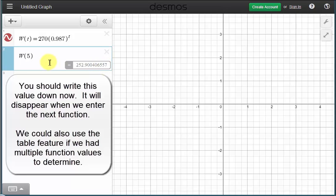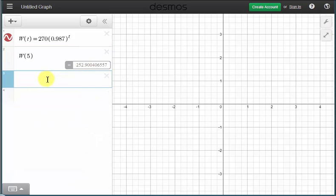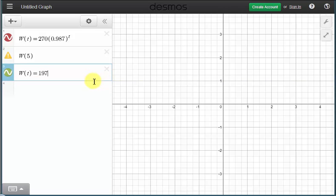To the nearest tenth, the weight would be approximately 252.9. Now the second question asks us to determine how long it took for Girth to weigh in at 197.23 pounds. So to solve this graphically, we'll enter the constant function w of t equals 197.23 pounds. And now we'll look for the intersection point of these two functions to determine how long it took for Girth to weigh this amount.